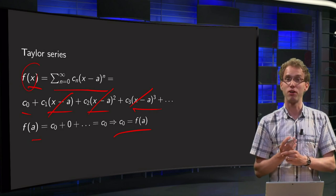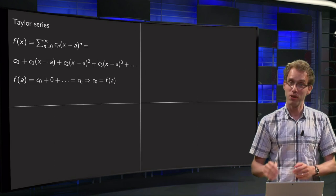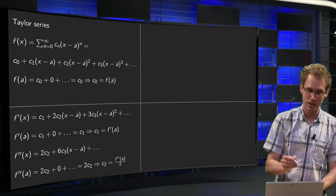c0 just equals f(a). Okay, one coefficient down, still infinitely many to go. So, how to find the other ones? Well, we can do the following trick: we can differentiate our power series.